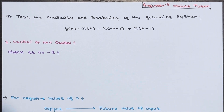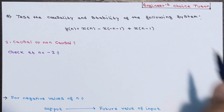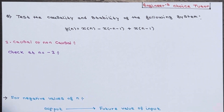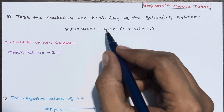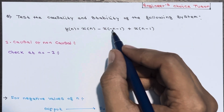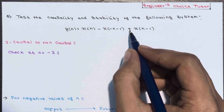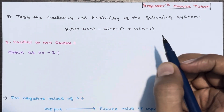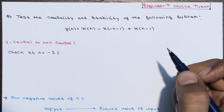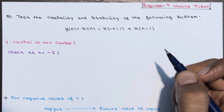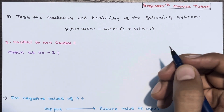Hi everyone. In this lecture we will test the causality and stability of the following system. The system equation is given as y(n) = x(n) - x(-n-1) + x(n-1). We will check whether the system is causal or non-causal first.